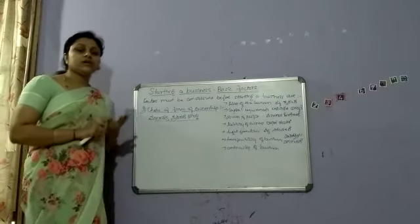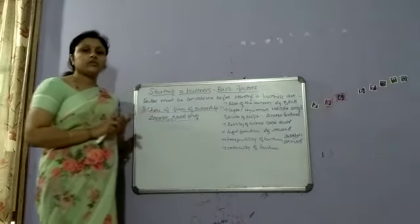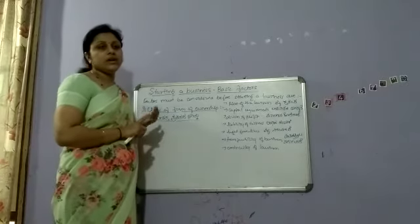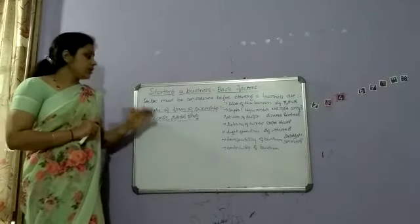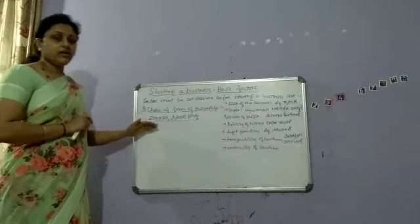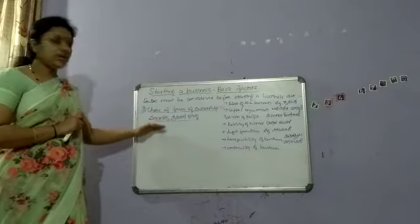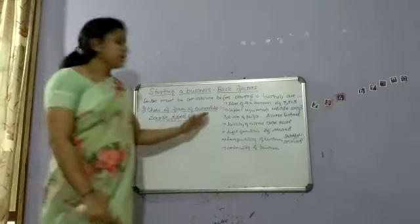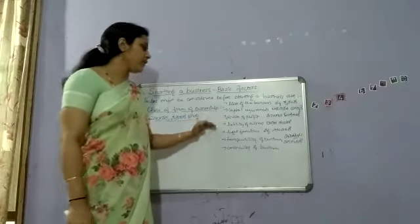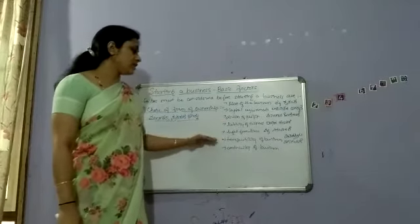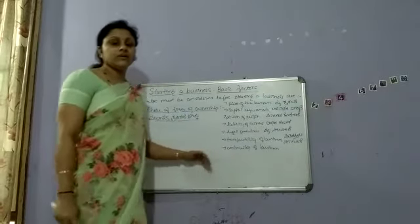Each form has its own merits and demerits. We will study about the sole proprietorship, partnership, and joint-stock companies in your second chapter in detail. The choice of each form of organization depends upon factors such as the line of business, capital requirements, division of profit, liability of owners, legal formalities, transferability of business, continuity of business, and so on.